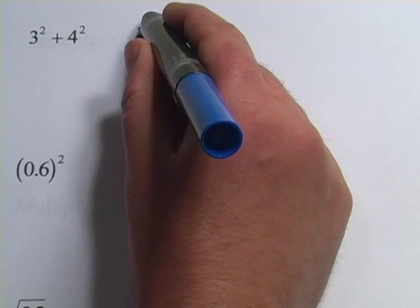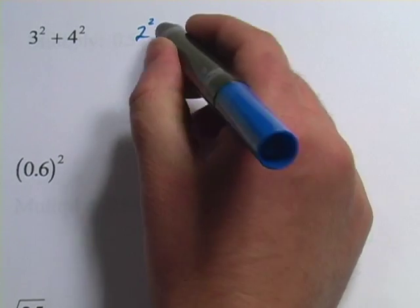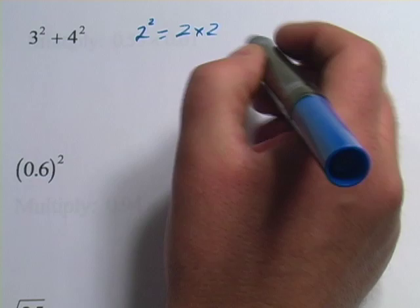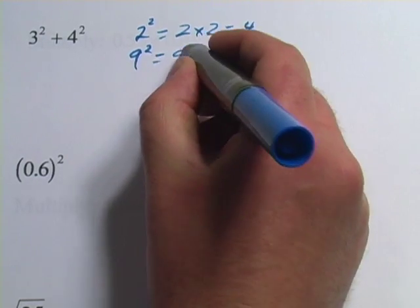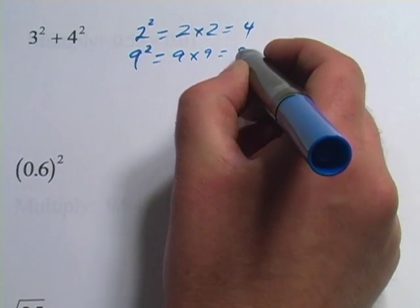So if you saw 2 squared, that is 2 times 2, or 4. If you saw 9 squared, that would be 9 times 9, or 81.